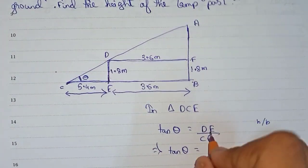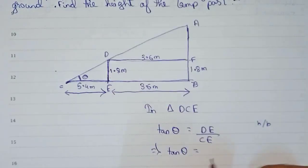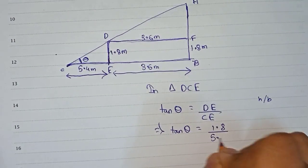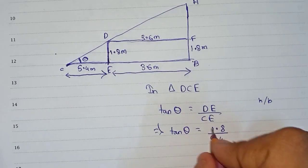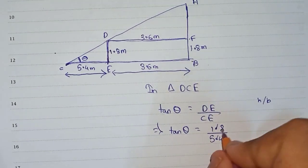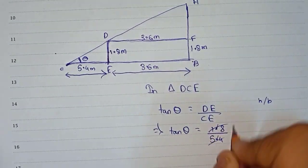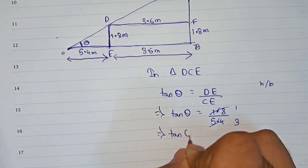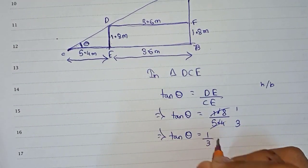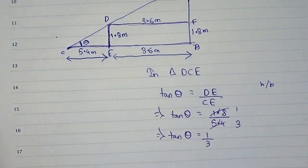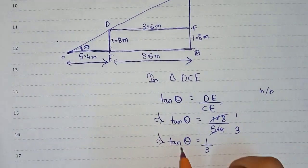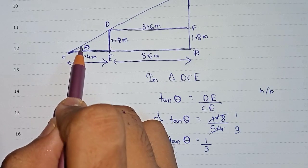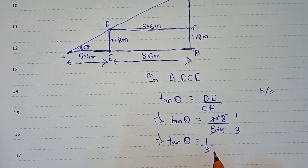So tan θ equals DE divided by CE. DE is 1.8 and CE is 5.4. Simplifying by removing the decimal, it becomes 1 by 3. So tan θ equals 1/3.